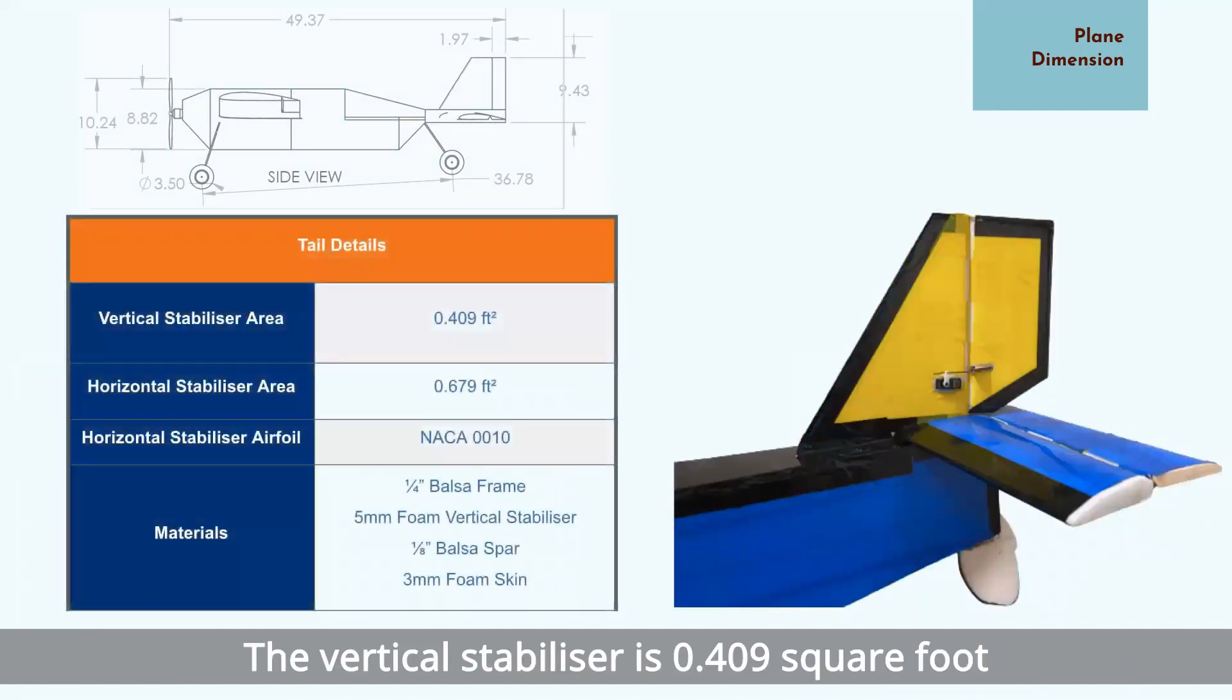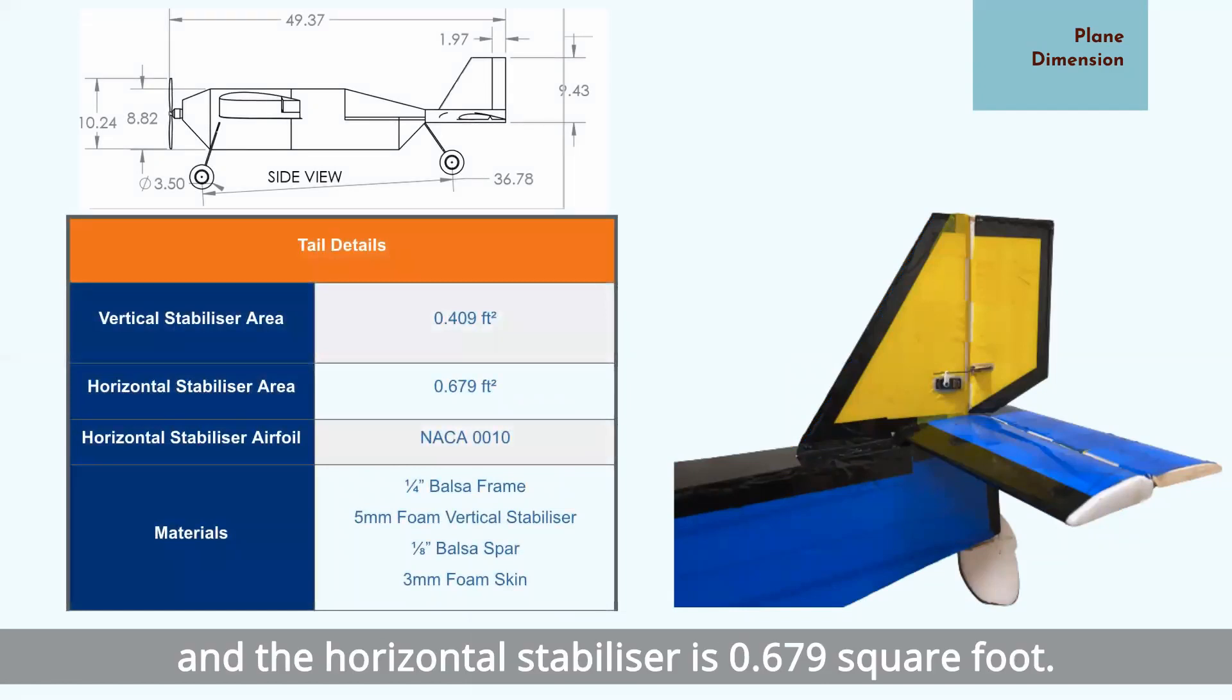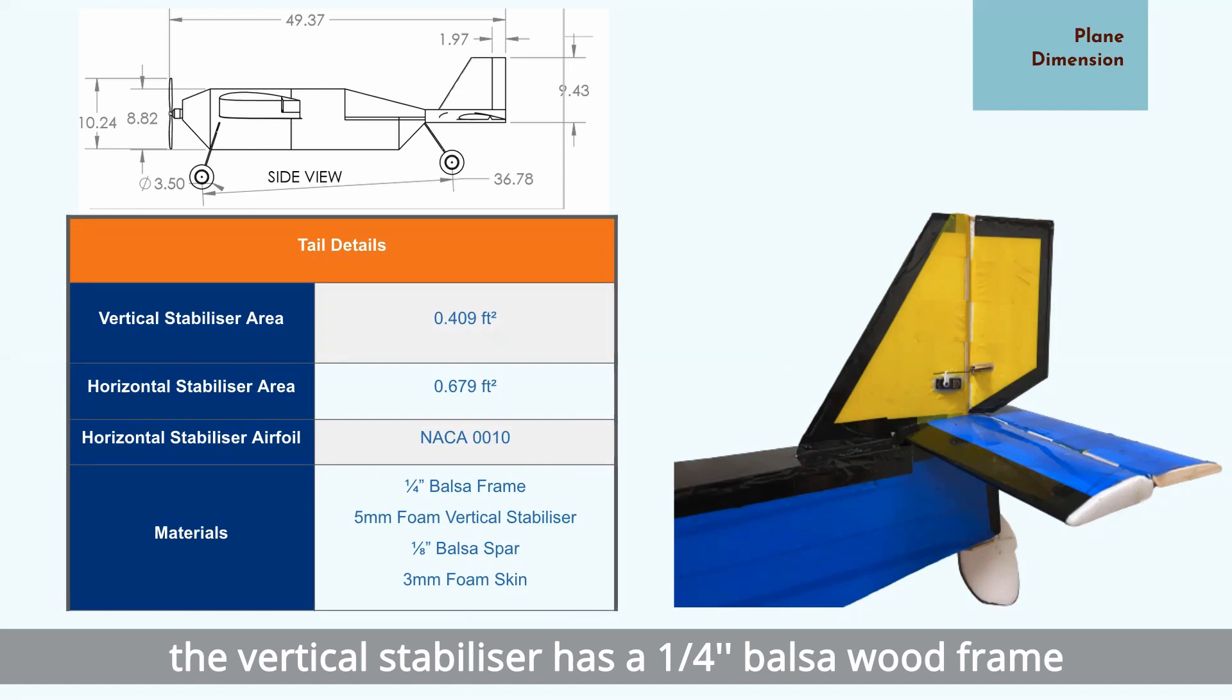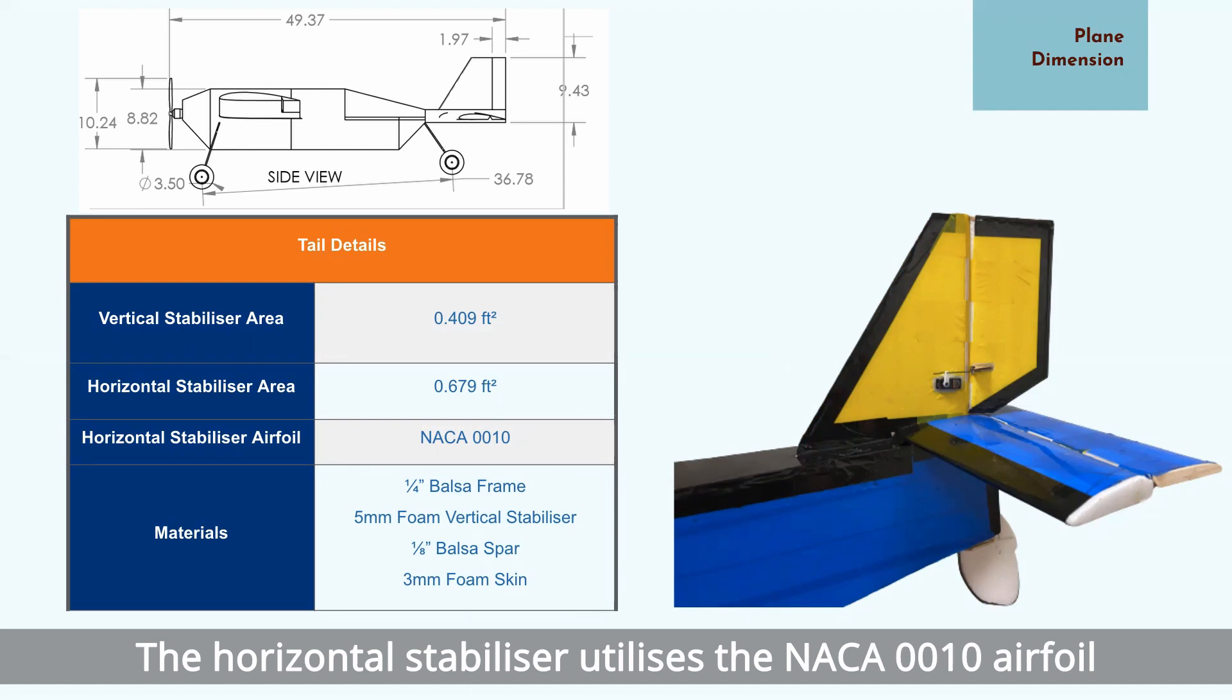The vertical stabilizer is 0.409 square feet and the horizontal stabilizer is 0.679 square feet. The vertical stabilizer has a 1.25 inch balsa wood frame and 5mm foam infills. The horizontal stabilizer utilizes the NACA 0010 airfoil and consists of a 1.8 inch balsa spar and 3mm foam skin.